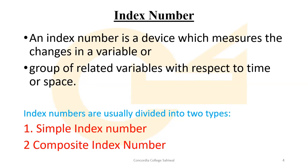Index numbers are usually divided into two types: first, simple index number, and second, composite index number. Dear students, if you get this as a short question — what is index number? — then you have to write the definition and write the names of the types, and your answer on index number will be complete.